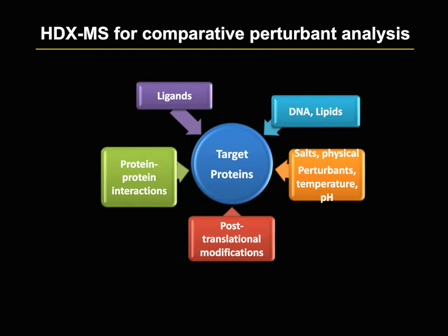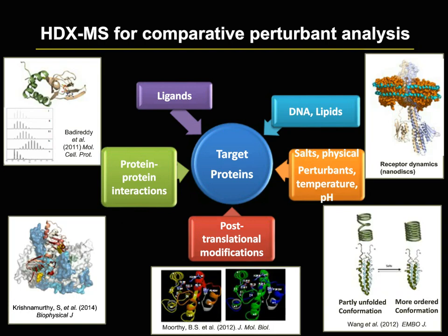HDX-MS is a very ideal method for looking at different kinds of perturbations. A target protein can be perturbed by ligands, DNA, lipids, physical perturbants like temperature, pH, and salts, or you can look at post-translational modifications or protein-protein interactions. In some recent work, we've looked at all of these types of perturbations. You can also look at membrane protein dynamics using surrogates such as nanodisks, which allows capturing dynamics of membrane proteins in a membrane-like environment.